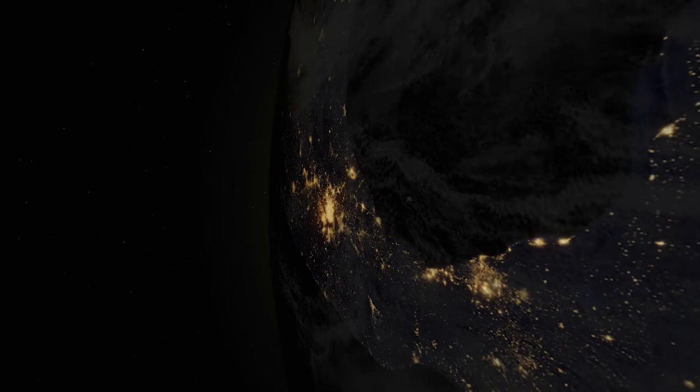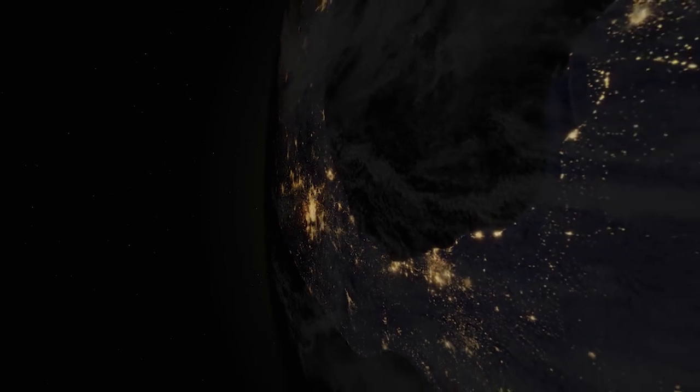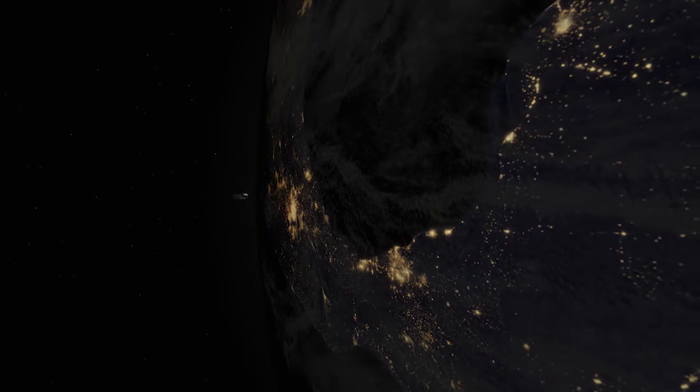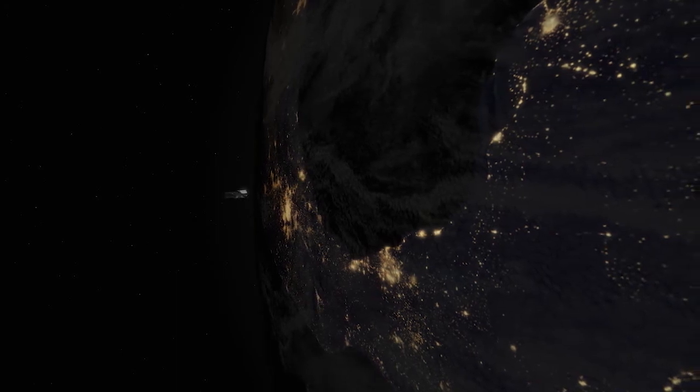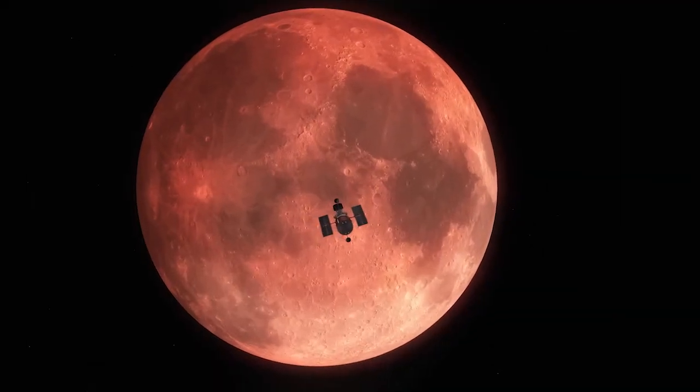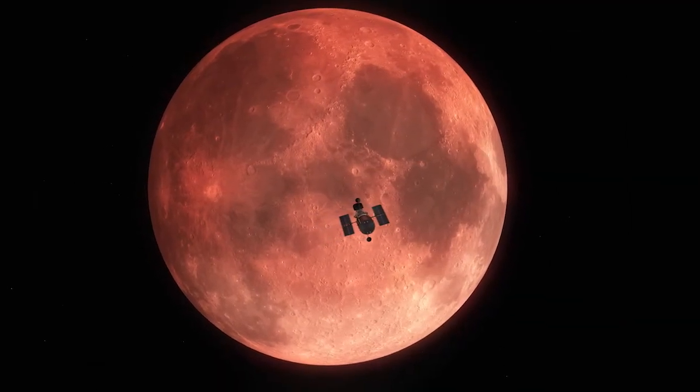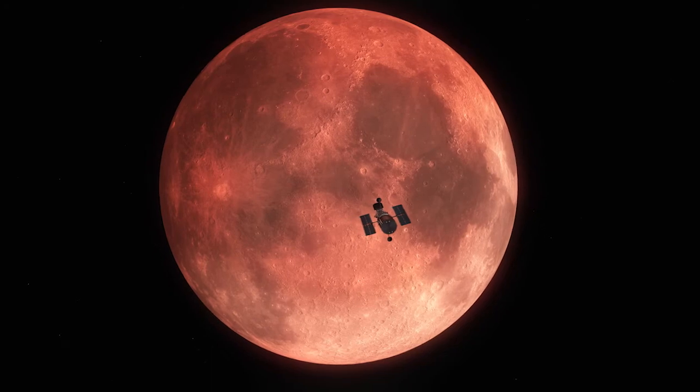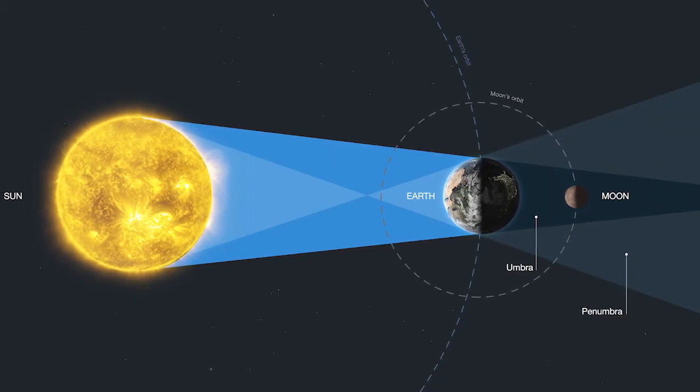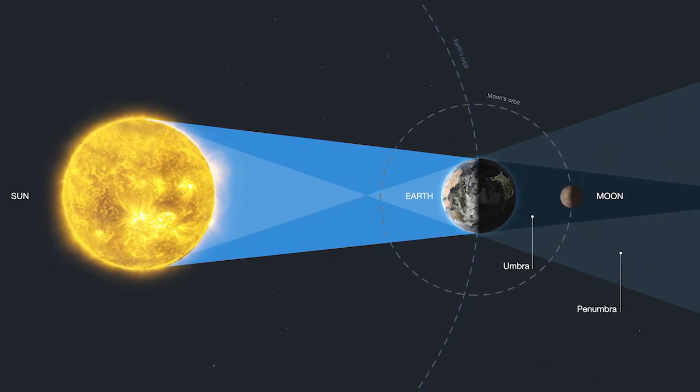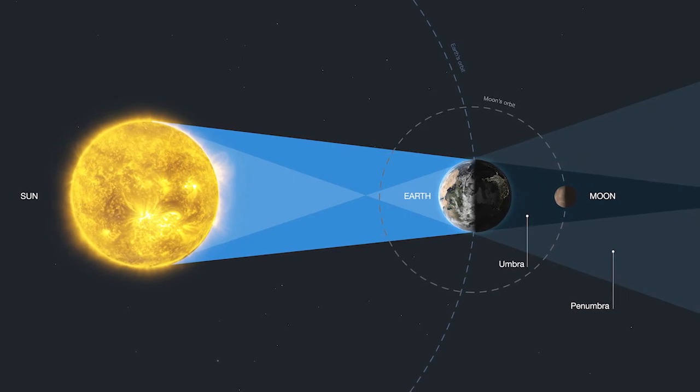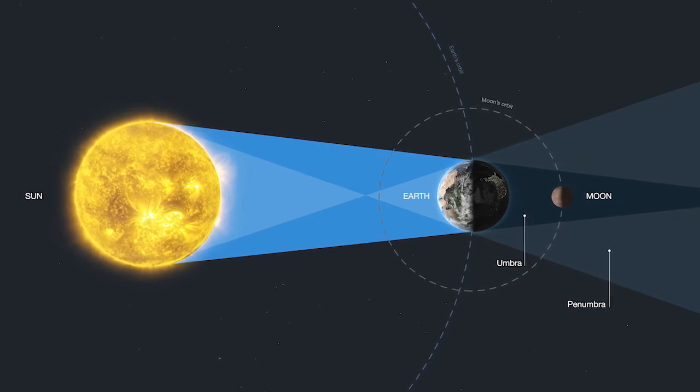For example, during the lunar eclipse of January 2019, astronomers used Hubble for a special spectrographic experiment that tested how they will observe Earth-like planets around other stars in the search for life in the future. Our planet's perfect alignment with the Sun and Moon during a total lunar eclipse mimics the geometry of a transiting terrestrial planet with its star.